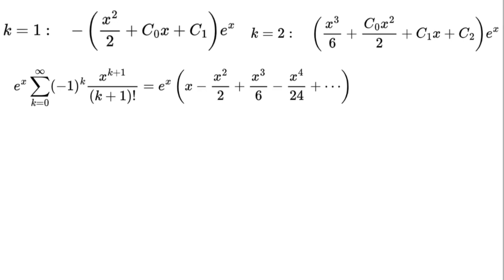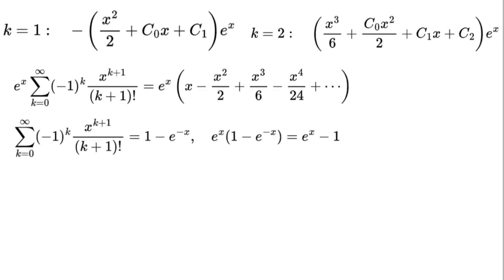This sum — the sum from k equals 0 to infinity of negative 1 to the power of k times x to the power of k plus 1 over (k plus 1) factorial — equals 1 minus e to the power of negative x. So e to the power of x times (1 minus e to the power of negative x) equals e to the power of x minus 1.